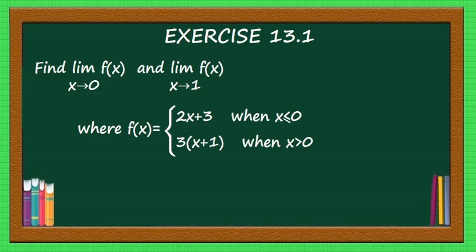Hello students. Let us continue with another type of questions in this chapter. The problem will be like this: find limit extending to 0 of f(x) and limit extending to 1 of f(x), where f(x) is equal to 2x plus 3 when x is less than or equal to 0, and 3 into x plus 1 when x is greater than 0. Here the function is defined differently in different intervals. Let us find the limit of this function.